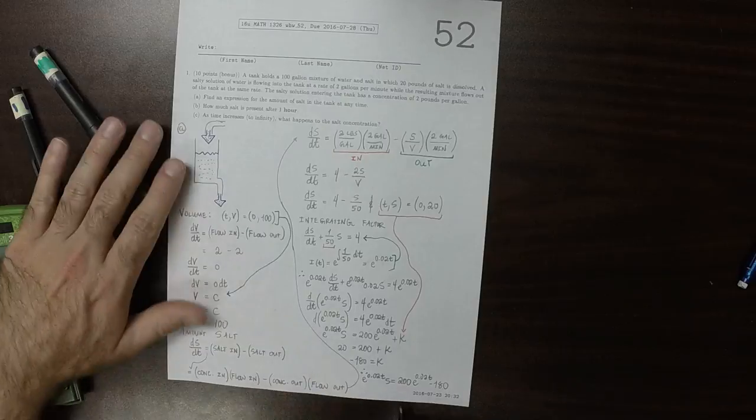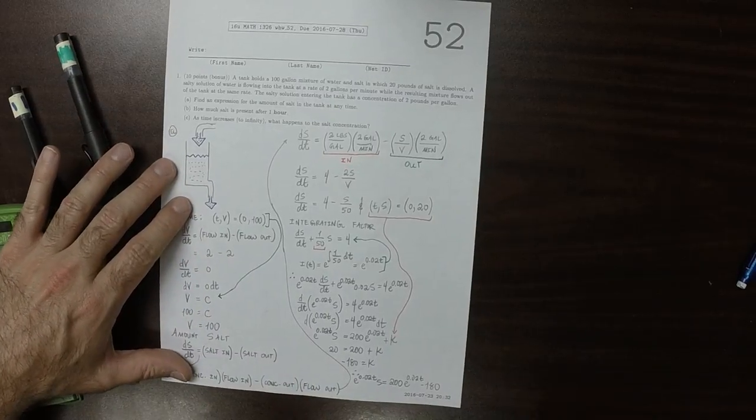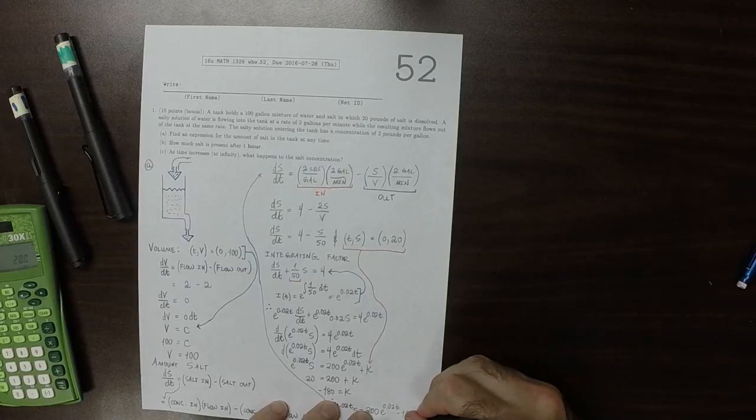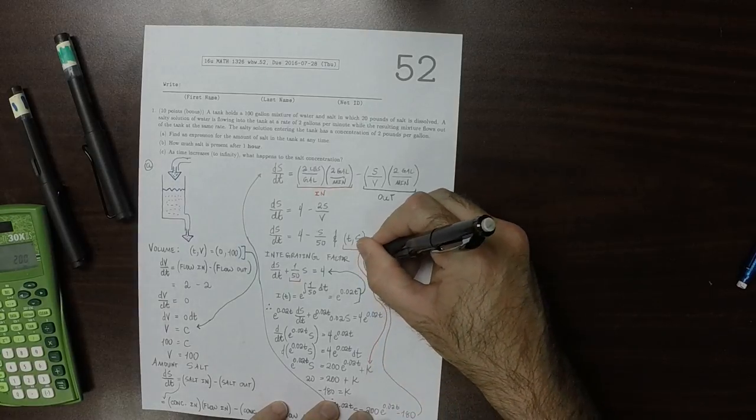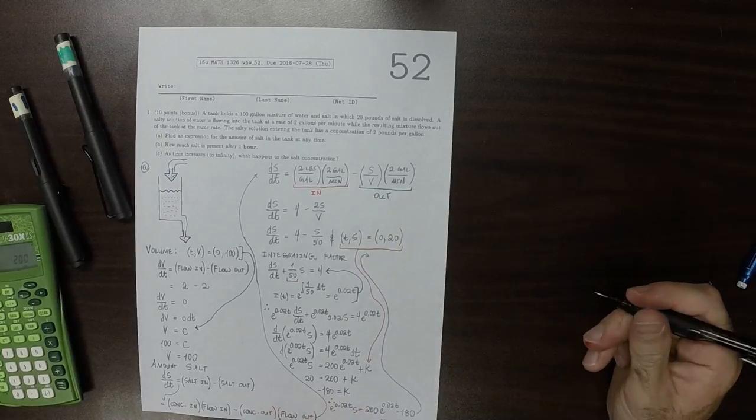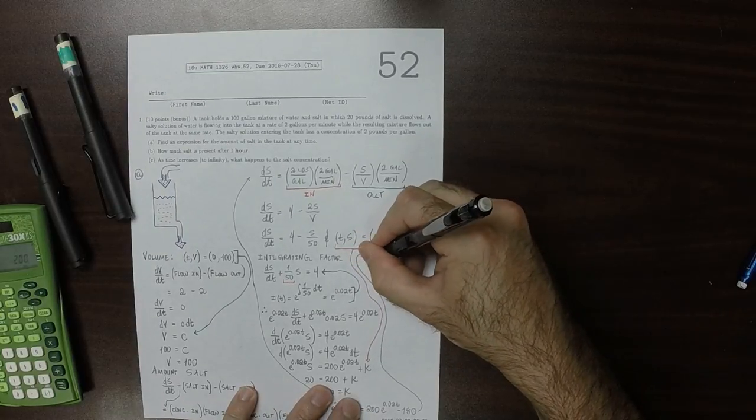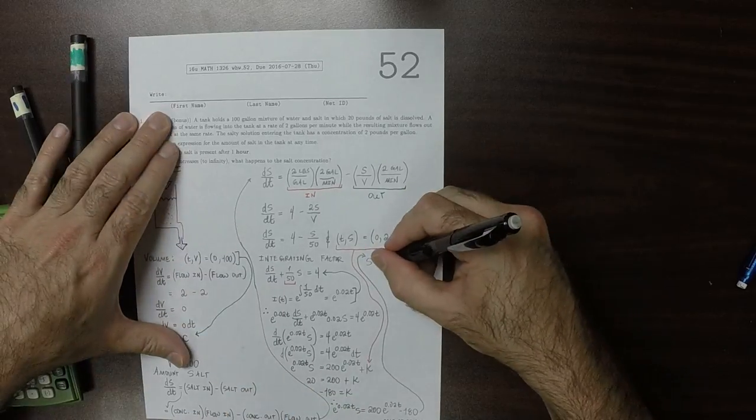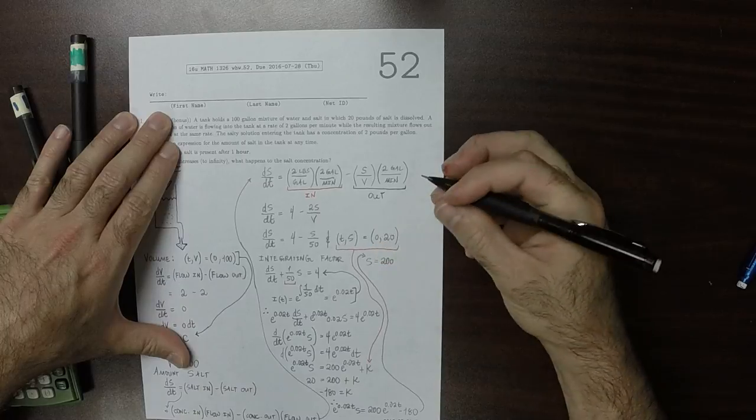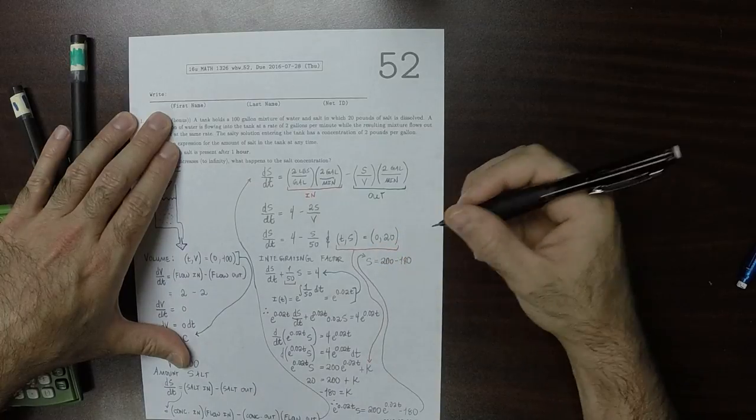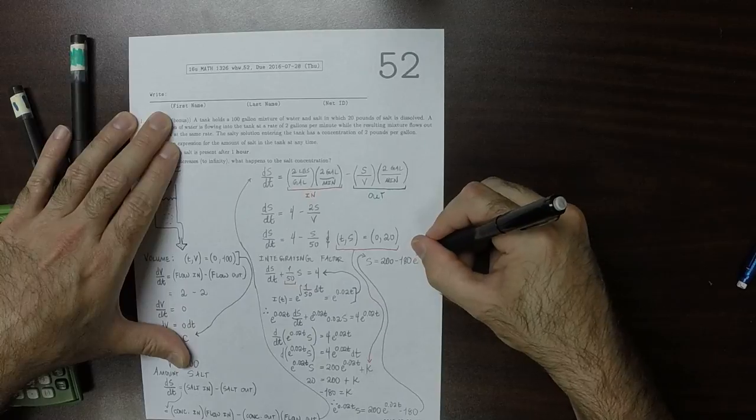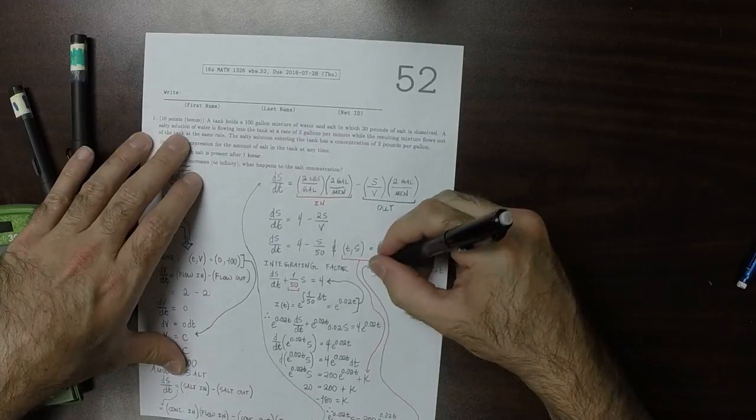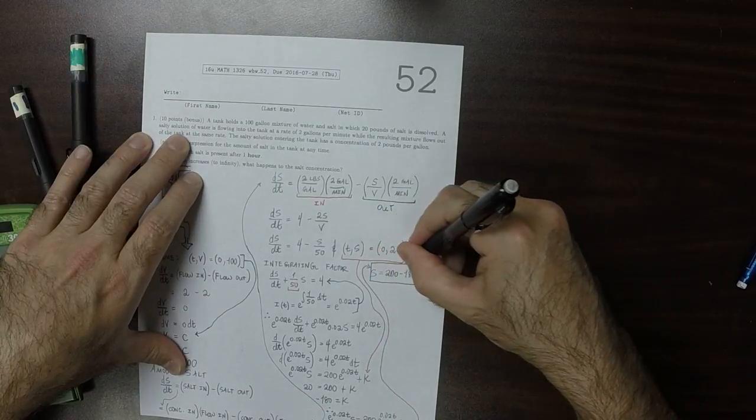So then now, if we divide both sides by exponential of 0.02t, then we get the equation S is 200 minus 180 exponential negative 0.02t. So this is the answer to part A.